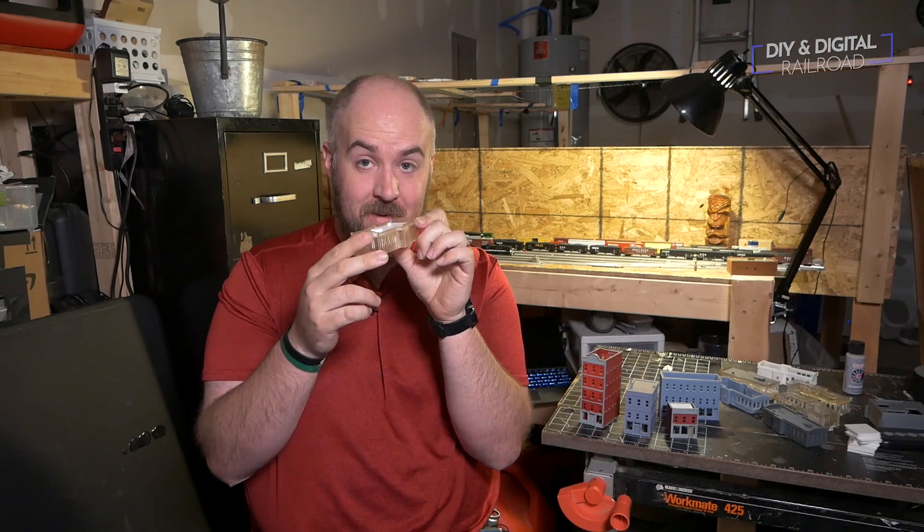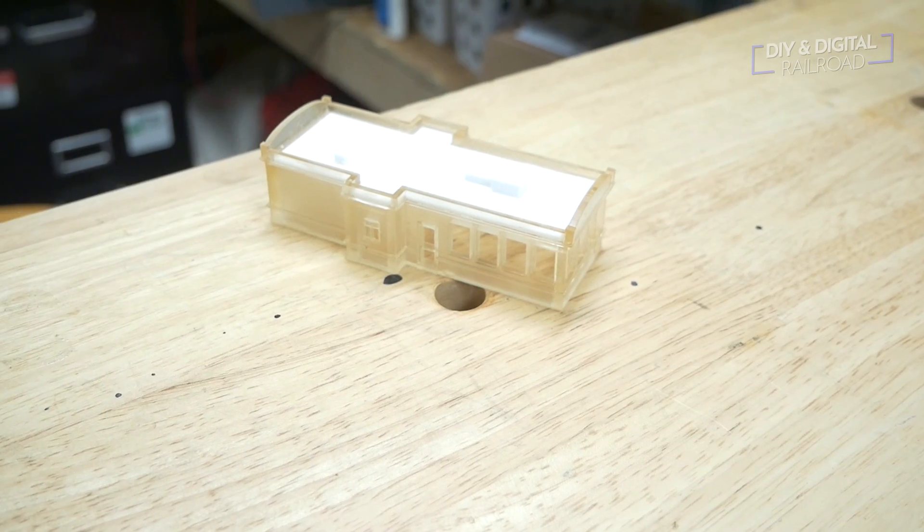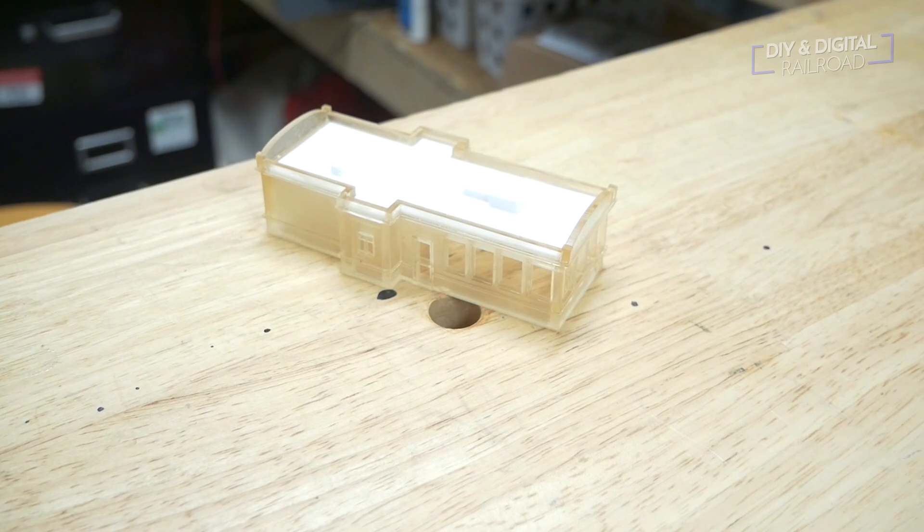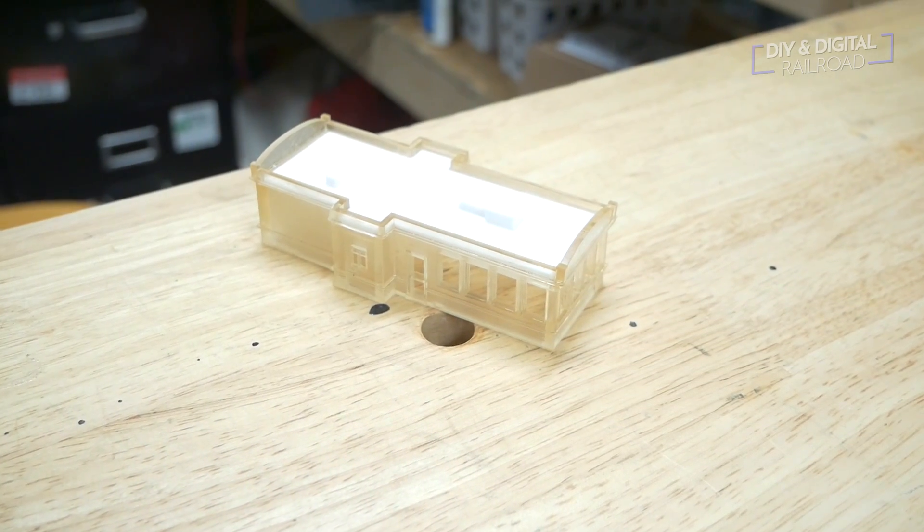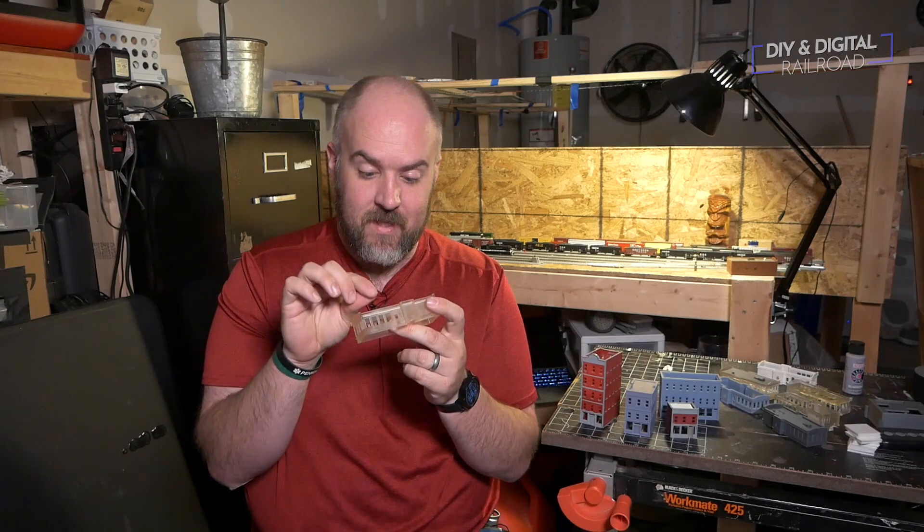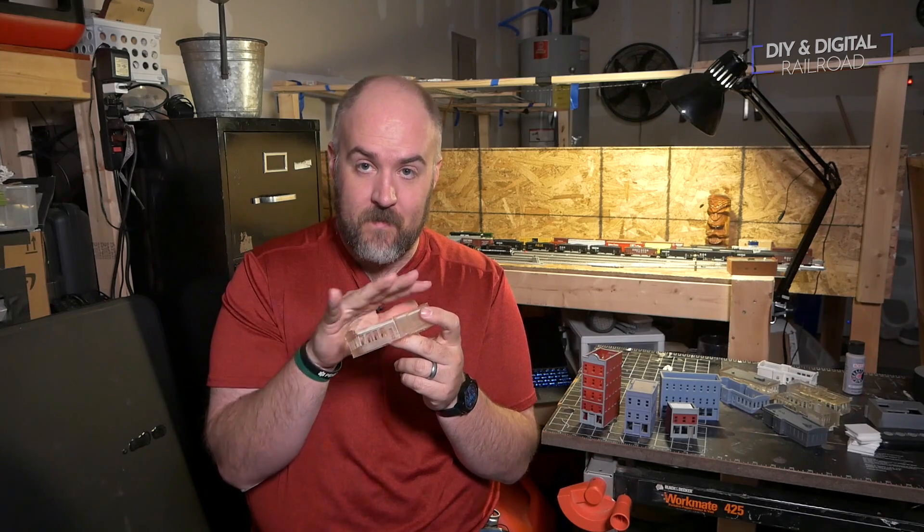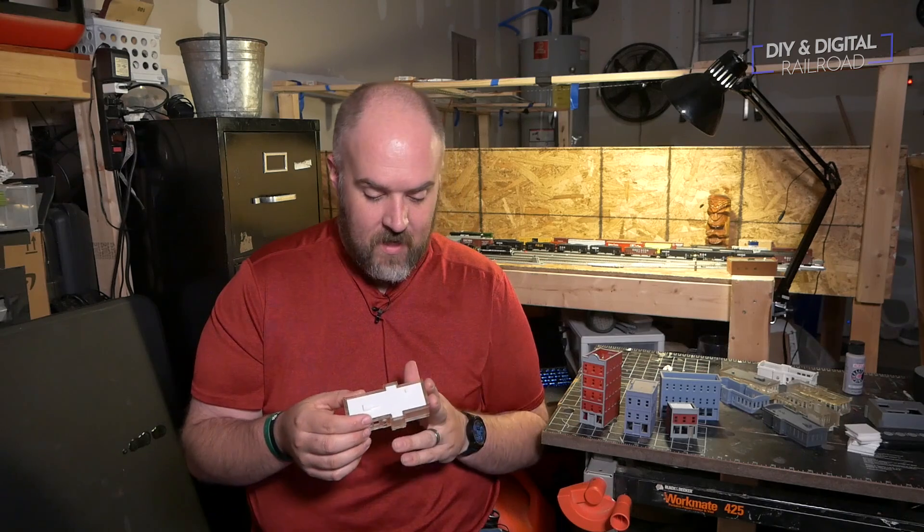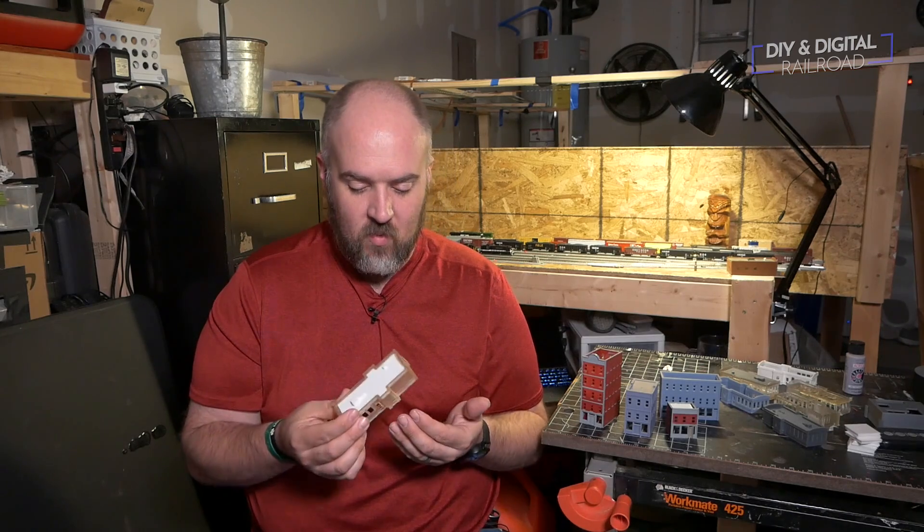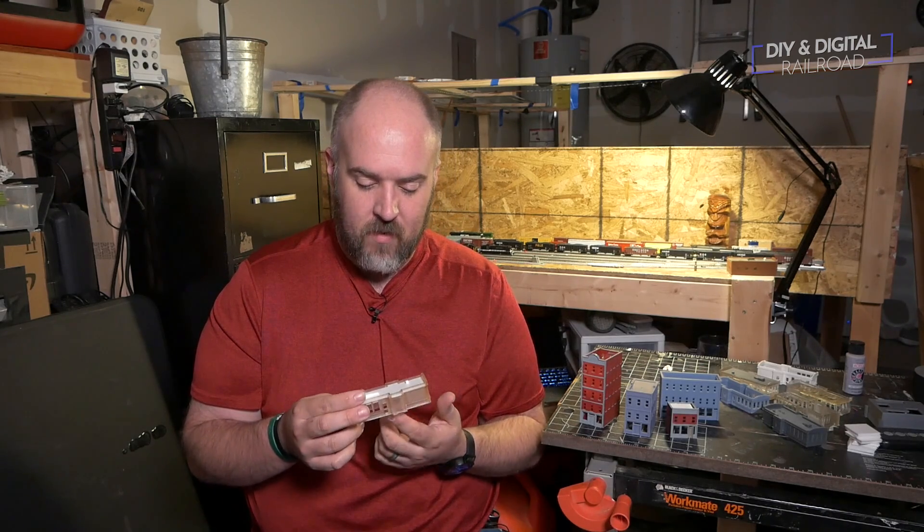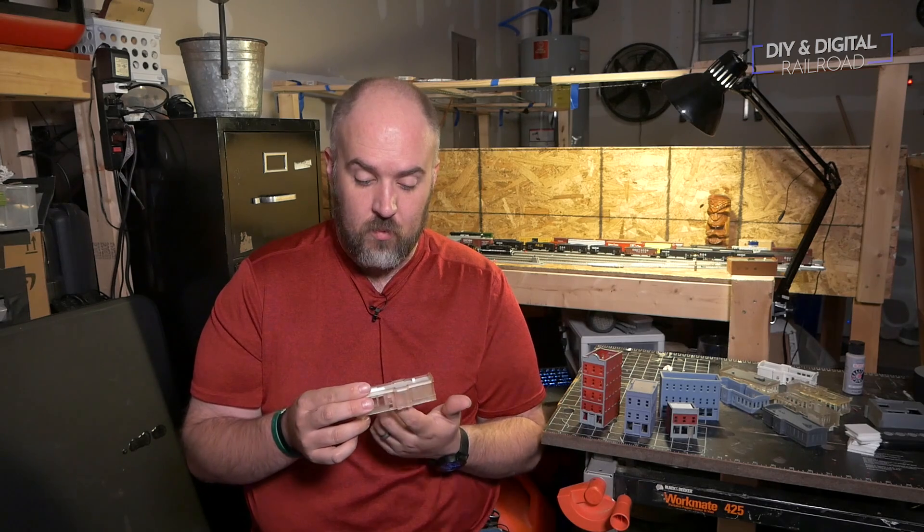Now, one thing you're going to notice is the roof looks a little different than what the rest of the building looks like, and that's because this is actually not the original 3D print. This is one after several prototypes. It took me a few tries to get one that I was somewhat satisfied with, and what I basically found out is that I don't need to print the roof with it. It causes a lot of issues with resin and makes a print a lot more likely to fail.